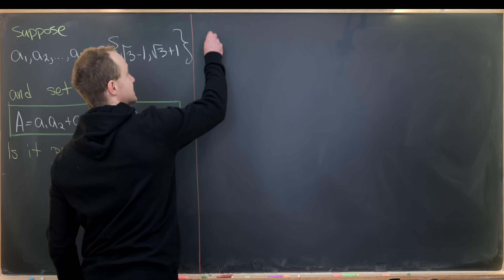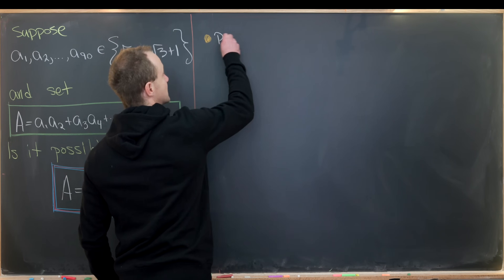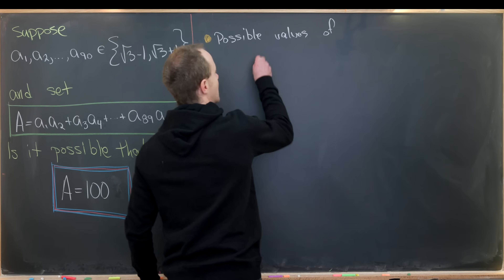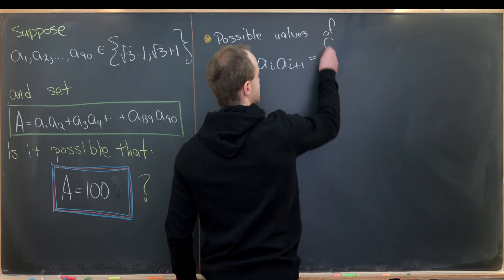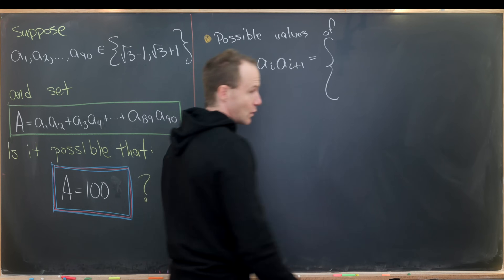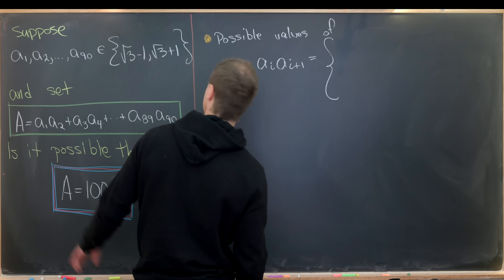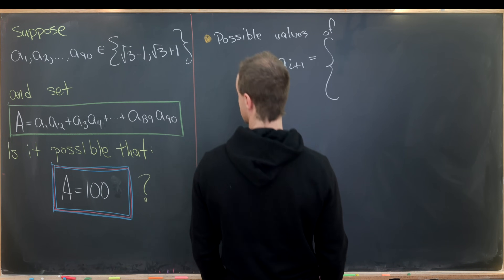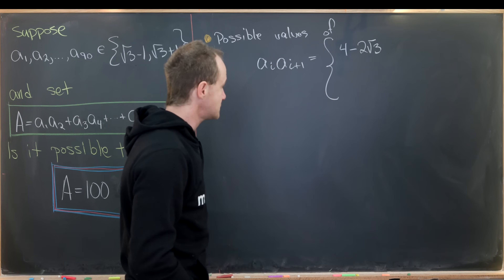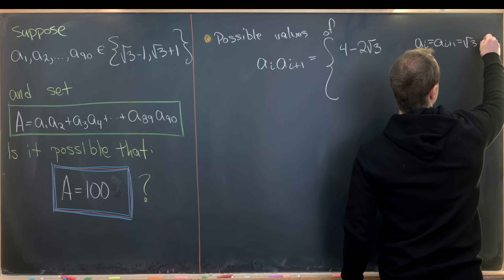The first thing to notice is that there are only three possible values of these pairwise products, a_i times a_{i+1}. The first is when a_i equals a_{i+1} equals √3 minus 1, giving (√3 − 1)² = 4 minus 2 times the square root of 3.